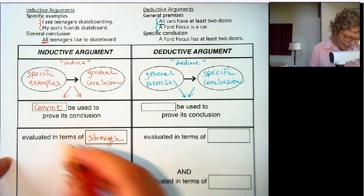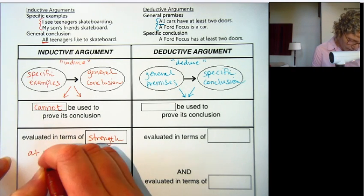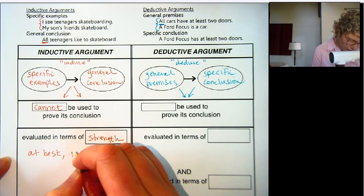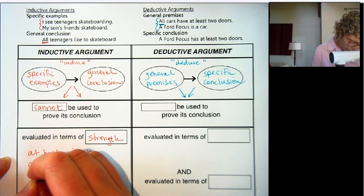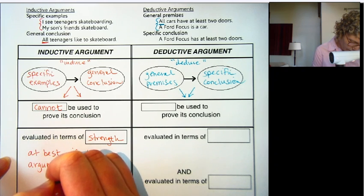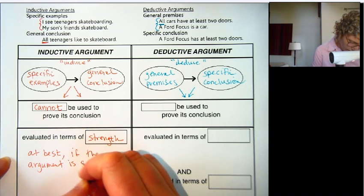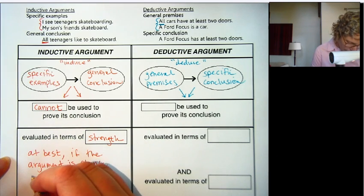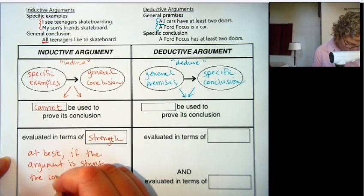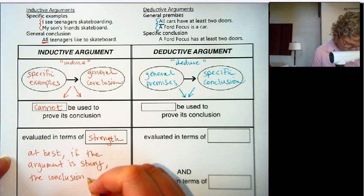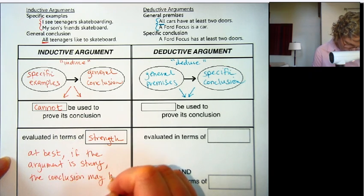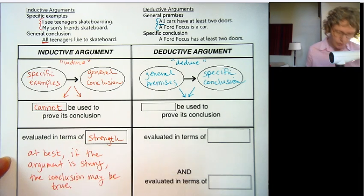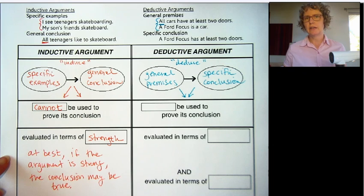We can only evaluate an inductive argument in terms of strength — we can say it's a strong, weak, or moderate argument. We can't prove that anything is true with an inductive argument. So at best, if the argument is strong, the conclusion may be true. You really have to evaluate it for yourself.